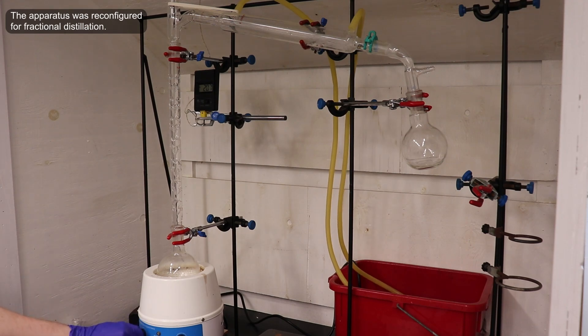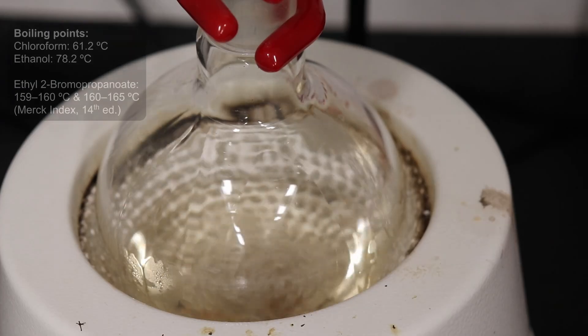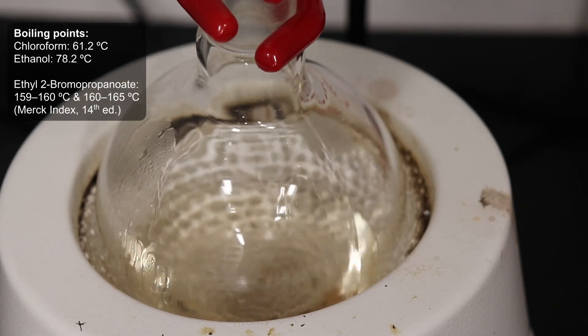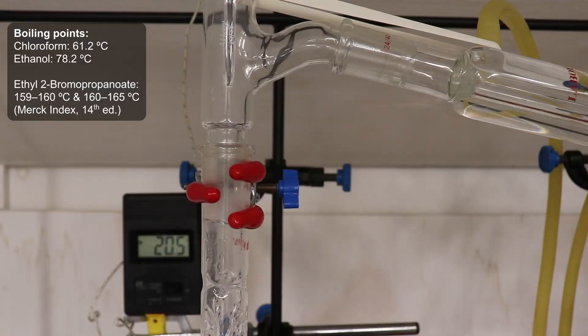Then the rest of the apparatus was disassembled, and replaced with a fractional distillation setup. On heating, the chloroform and ethanol begin to boil off first, and are collected in the receiving flask.